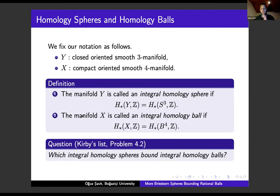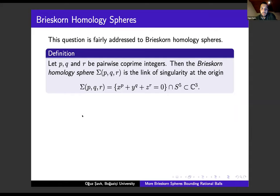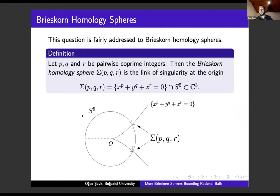Which integral homology spheres bound integral homology balls? This question is addressed to Brieskorn spheres. Given pairwise coprime integers p, q, and r, they are always integral homology spheres. They can be defined as the links of the singularity at the origin and are algebraic geometric objects.